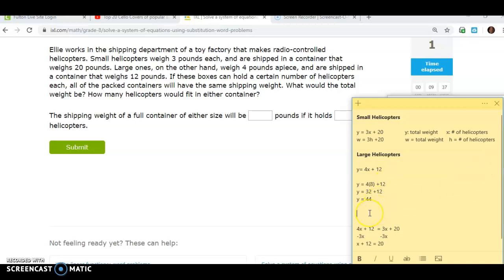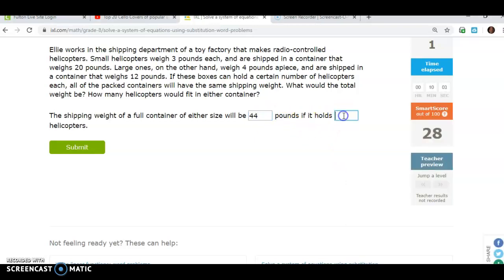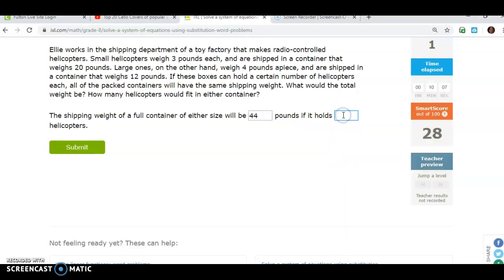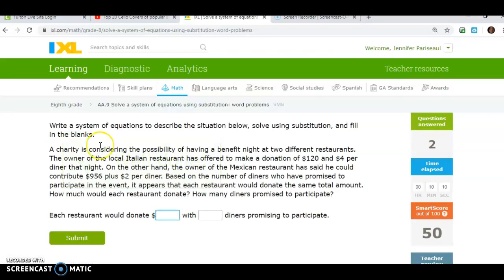Okay, so if I send eight helicopters, it will be 44 pounds. And I can check up here if I put in an eight up here just real quick, times eight. Three times eight is 24 plus 20. Yep, I get the same answer, 44, which is what I want. Alright, so the shipping weight of a full container of either size will be, now this wants the weight, so pay attention to what you're asking for. So the weight is going to be 44, and it holds, I have a horrible short-term memory, eight. Alright, submit.